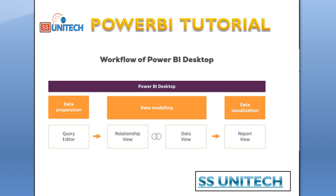In data modeling there are two types: the Relationship View and the Data View. In the Relationship View, we can have more than one table and build relationships between those tables. In the Data View, we can check the data within the tables. After that, data visualization is the final step, where we create the report in the Report View.